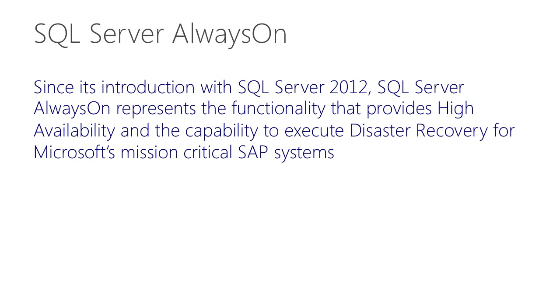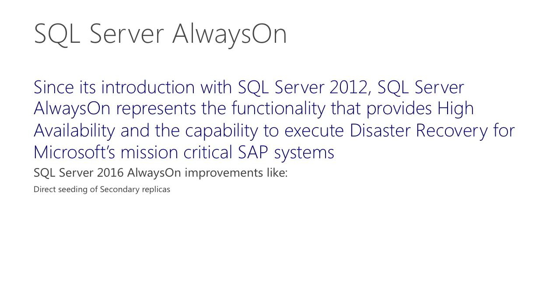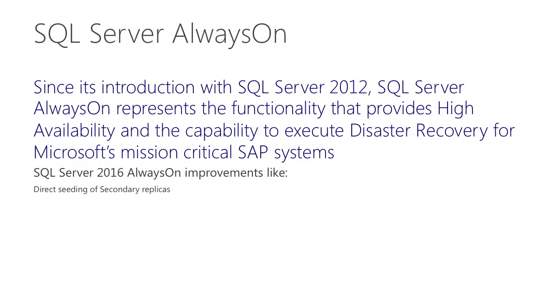Individual improvements of SQL Server 2016 Always On that Microsoft IT is looking forward to include, for example, direct seeding of a secondary replica. Previously, secondary replicas were created by taking backups of the primary, restoring those backups to the secondary, and joining that replica into the availability group. With SAP applications dealing with multi-terabyte databases — in extreme cases a 9TB SAP ERP system — this process required monitoring and manual labor. With direct seeding of secondary replicas, this manual labor can be avoided, as the primary replica sends data to the secondary and makes the replica join the availability group automatically.